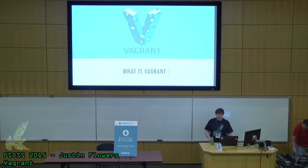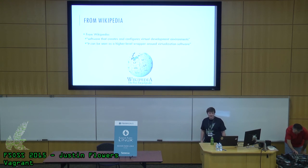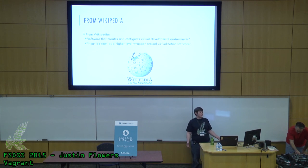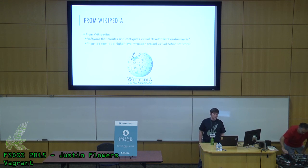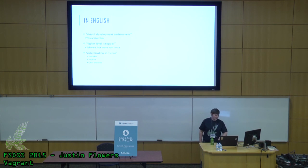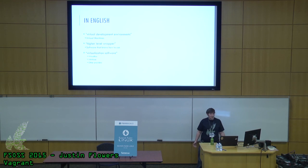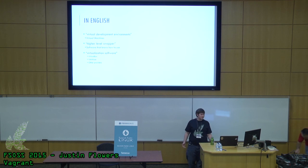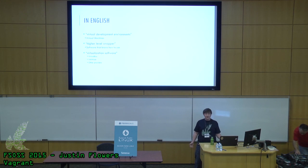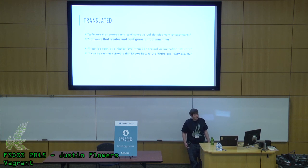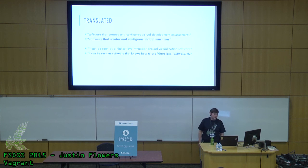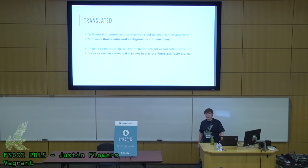So, what is Vagrant? From Wikipedia, the definition is a software that creates and configures virtual development environments, and it can be seen as a higher-level wrapper around virtualization software. In English, virtual development environments really just means virtual machines. A higher-level wrapper really just means software that knows how to use virtualization software — basically VM providers, so VirtualBox, VMware, those sorts of things.